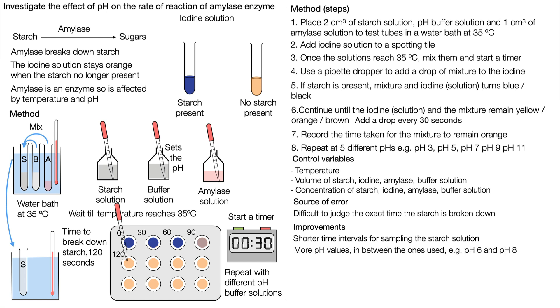We can use more pH values in between the ones used, for example 6 and 8, so we would have 5, 6, 7, and 8. And we would repeat and take a mean for accuracy and to spot any anomalous results.